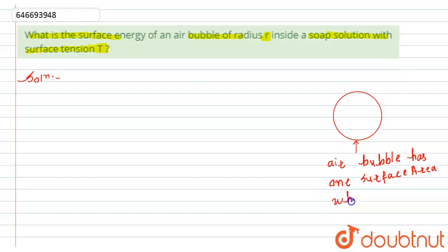When it is inside the soap solution. So according to this, it is given the surface tension for this is capital T. So from here we can say that the surface energy for this air bubble,